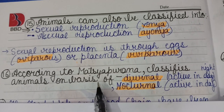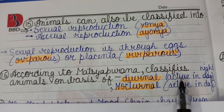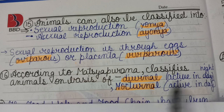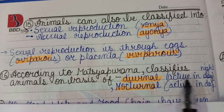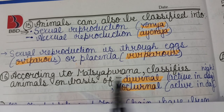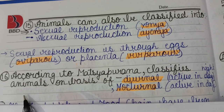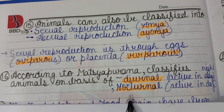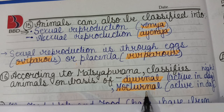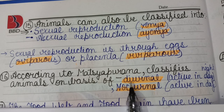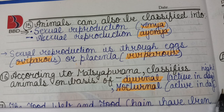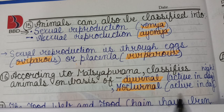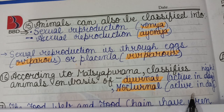According to the Matsya Purana, animals are further classified on the basis of diurnal or nocturnal behavior - diurnal means active in the day and nocturnal means active at night.